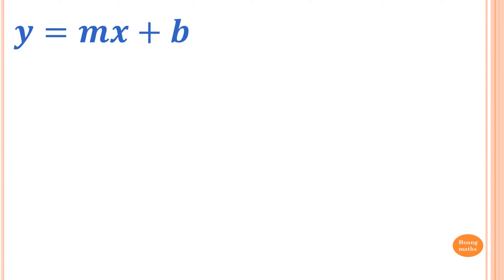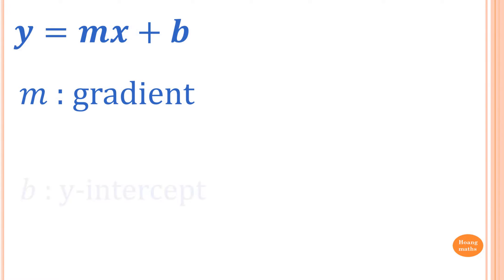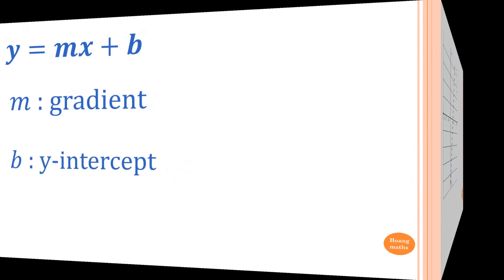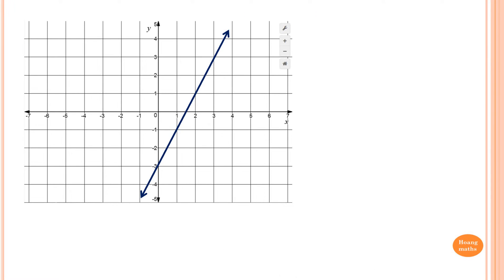y equals mx plus b, so m is the gradient and y-intercept is b. Let's find the equation of this straight line. First of all, you know that the y-intercept is minus 3.